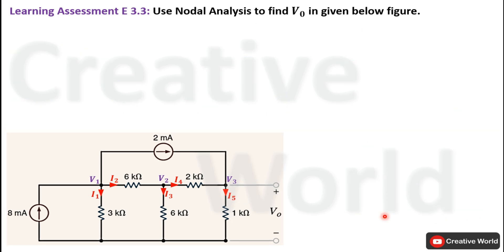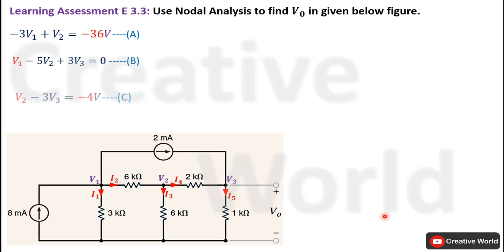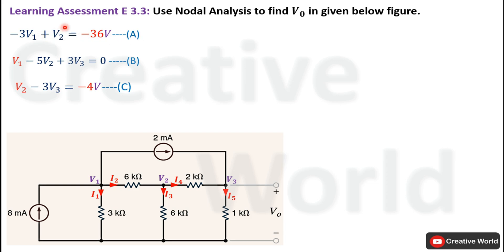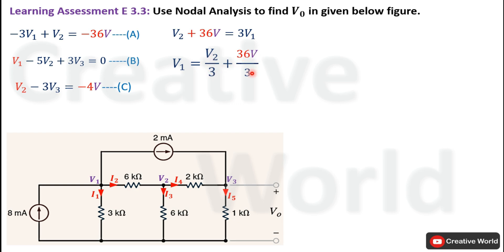We now have three node equations A, B, and C, and need to solve them to find V3, since V3 equals V0 — the voltage across the 1 kΩ resistance. From Equation A, swapping terms and dividing both sides by 3 gives V1 equals V2/3 plus 12 V.